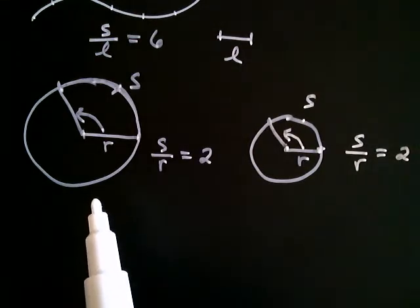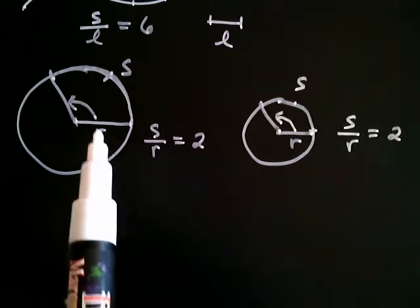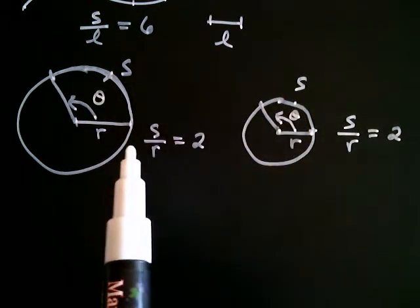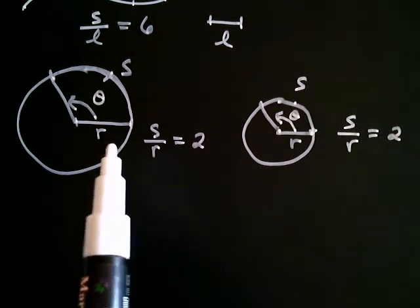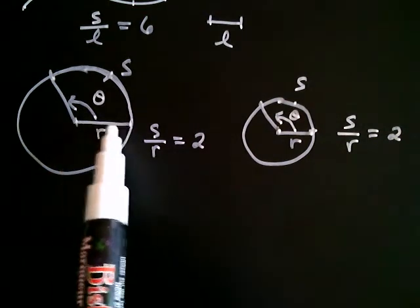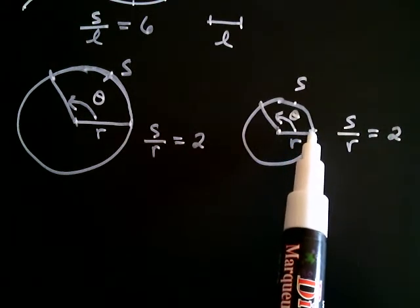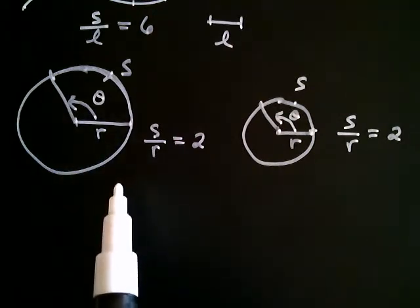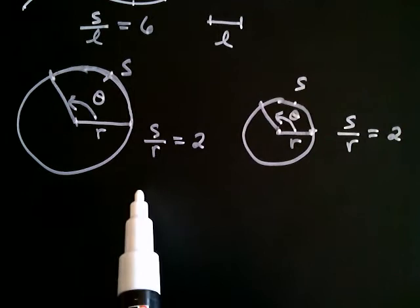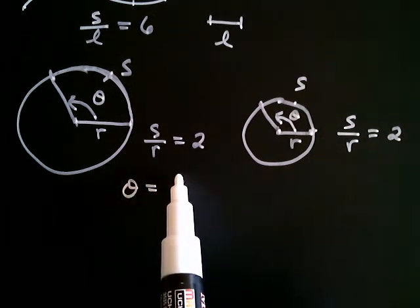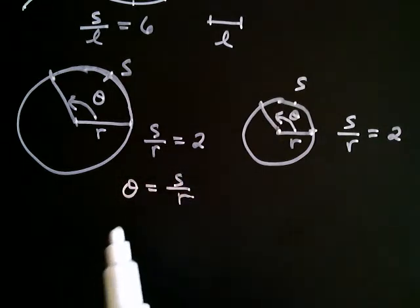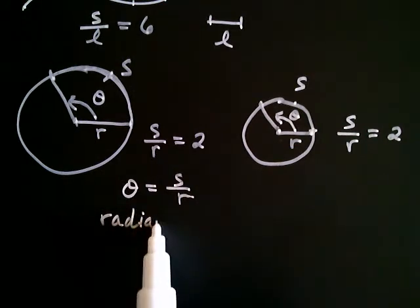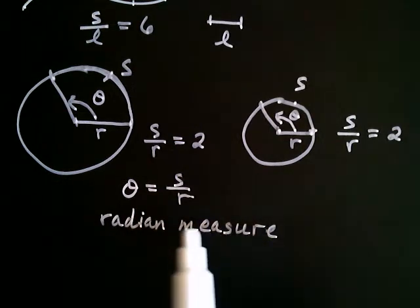What's important to notice in both circles is that the amount of rotation was the same — this angle theta is the same as this angle theta. For any circle you draw, if you use the radius as your measuring stick and move through two radii, you always get this angle, this amount of opening. That's why we have a new way of defining an angular measurement: the angle theta can always be looked at as the ratio of arc length divided by radius, for any circle you draw. When you measure an angle this way, that's called the radian measure of the angle.